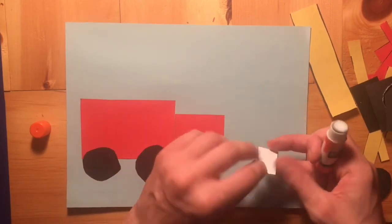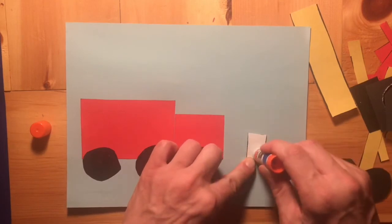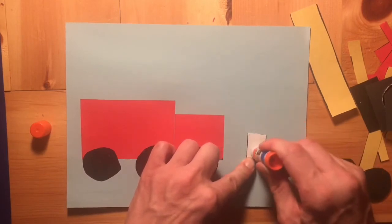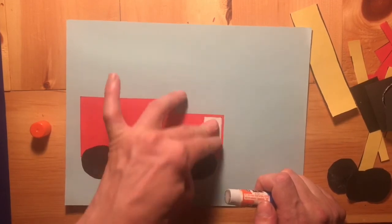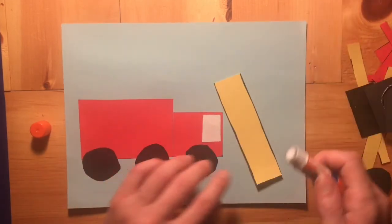So let's go ahead and put that window on now since I'm already talking about it. Glue it right in the top corner of the small piece of the fire truck.